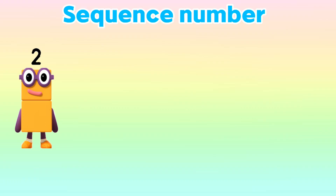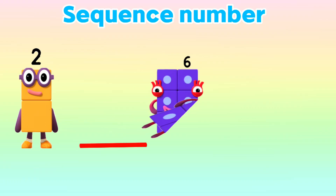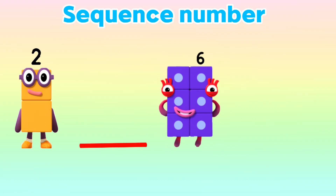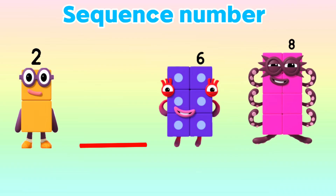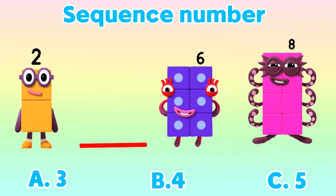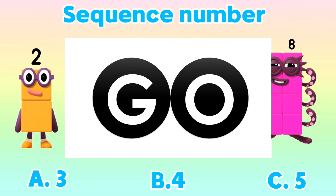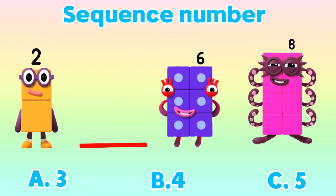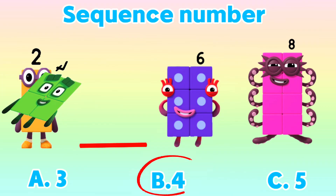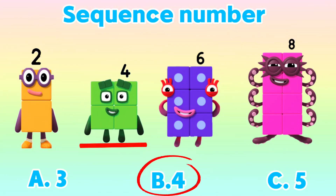2, blank, 6, 8. What is the correct answer? Is it letter A: 3? B: 4? Or is it letter C: 5? And the correct answer is letter B: 4.